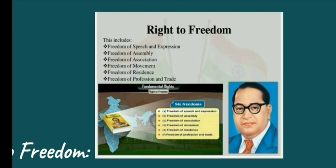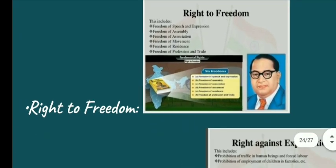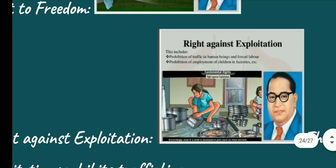The third main right is the Right Against Exploitation. Exploitation means to force someone to do something that the person is not willing to do. Our Constitution has Article 23 and 24 covering the Right Against Exploitation.